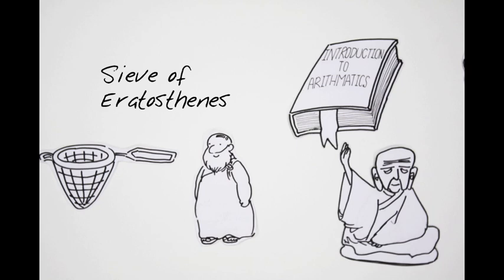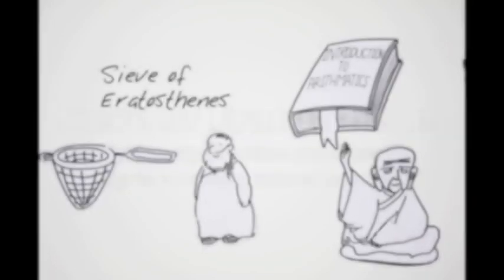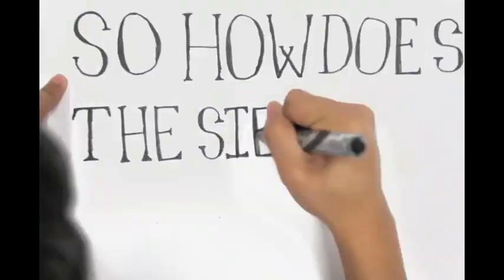The sieve is a simple algorithm which works to identify all of the prime numbers up to a certain natural number. So, how does the sieve of Eratosthenes work?